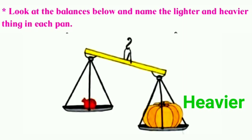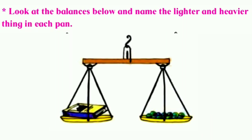The pan which has the pumpkin is heavier, whereas the pan having the pomegranate is lighter in weight. So we will write 'heavier' beside the pumpkin and 'lighter' beside the pomegranate. In the next image, one side of the pan has some marbles and the other side has a book, and the pan is equal — meaning the weight of the book equals the weight of the marbles.